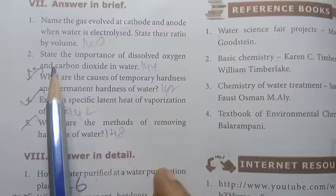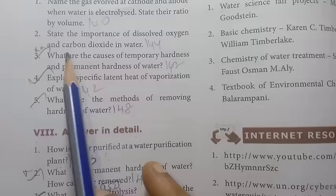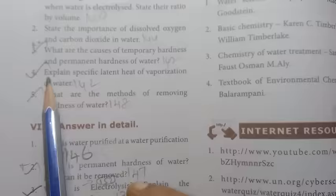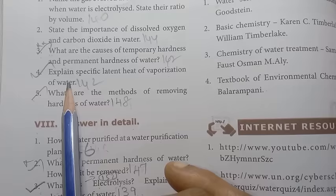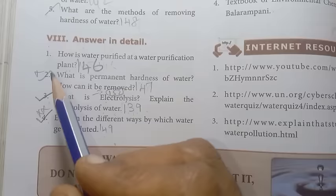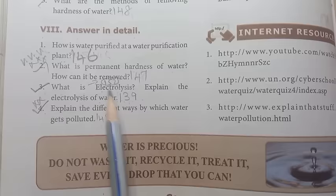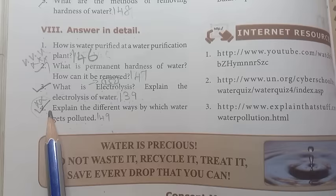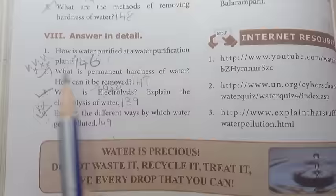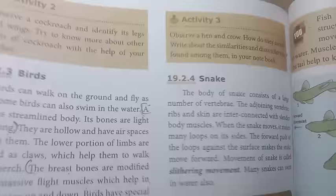Define the following. Page number 154, third question: What are the causes of temporary hardness and permanent hardness of water? This is a repeated question in different districts. Explain specific latent heat of vaporization of water, important question. What are the methods of removing hardness of water, important. Answer in detail: What is permanent hardness of water, how can it be removed? Very very important question. What is electrolysis? Explain the electrolysis of water, important. Explain the different ways by which water gets polluted, repeated question.